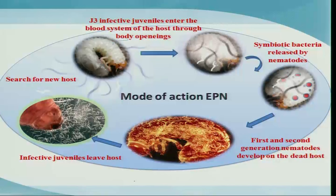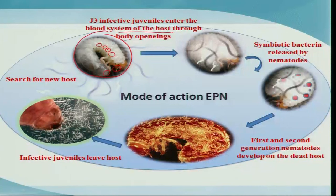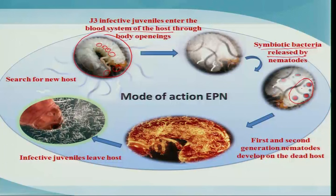Let us look at the mode of action of entomopathogenic nematodes. The infective juvenile, or third juvenile stage, is the free-living stage that seeks the host. Once it finds a host, it enters through natural openings such as the mouth, anal opening, or spiracles — the tiny openings used for respiration. Once inside, it penetrates into the hemocoel and releases the symbiotic bacteria, which produces toxins that kill the host cells by septicemia.